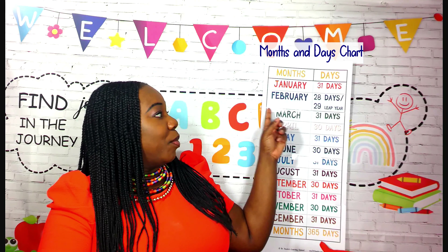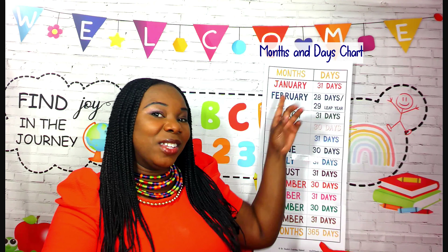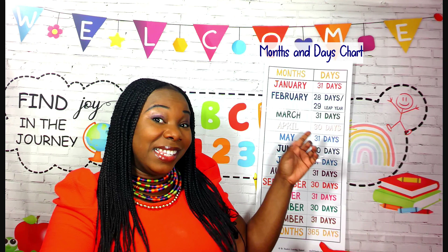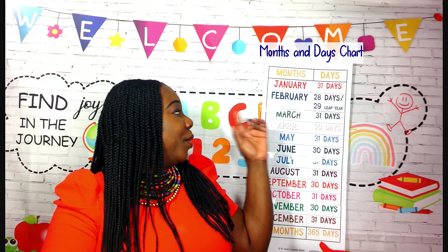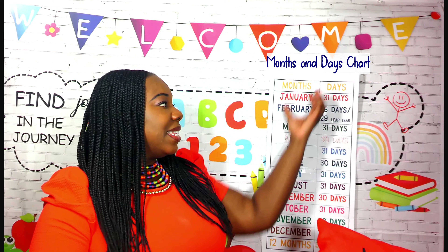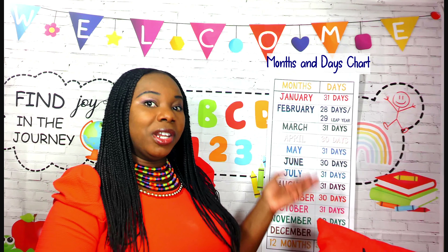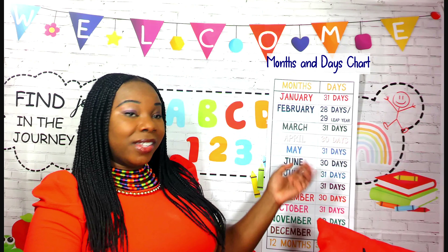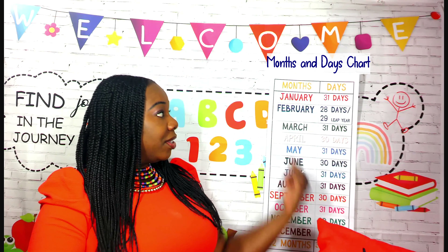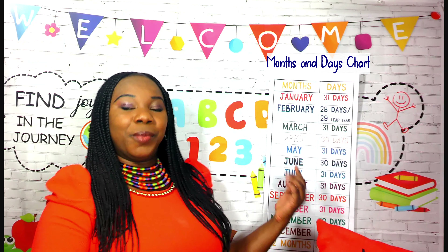January has 31 days. February has 28 days, and 29 days in each leap year. March has 31 days. It is necessary that our elementary learners learn the months of the year and the number of days in each month of the year.